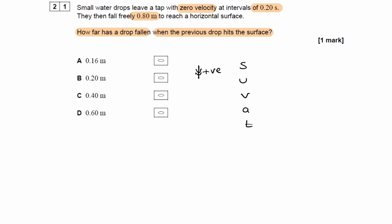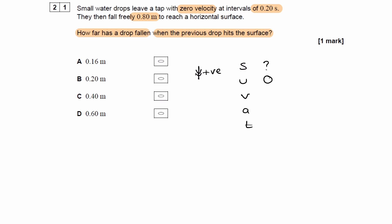So we know that the drops leave with zero velocity. We're trying to work out how far the drop has fallen. So there's two drops in this question. The first drop is the one that we're trying to work out distance for, and then there's the previous drop as well. I'll call the drop that we're trying to work out the distance for drop one, and then I'll call the previous drop drop two.